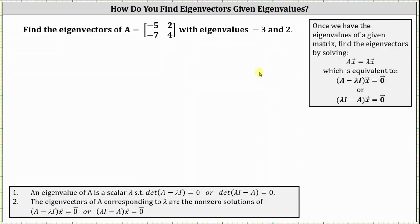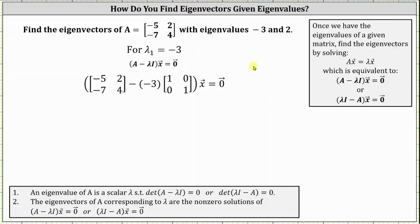Setting up the equation, let's let lambda sub one equal negative three. Using our equation we have matrix A minus negative three times the two by two identity matrix times vector x equals the zero vector.